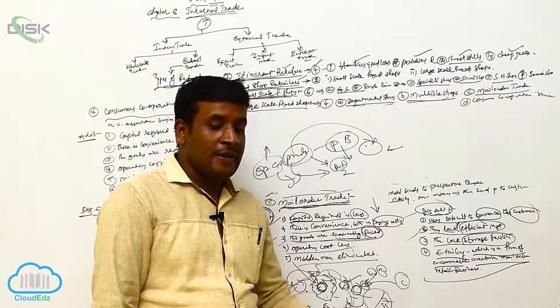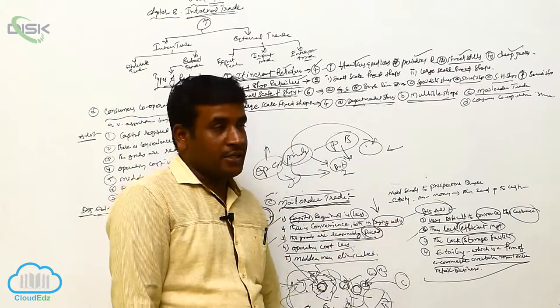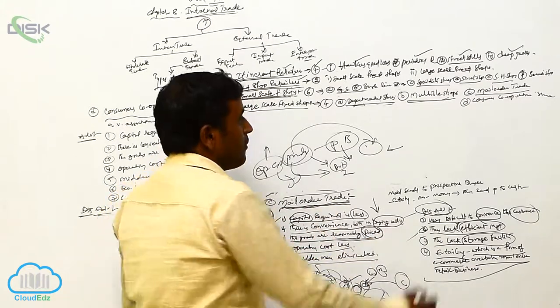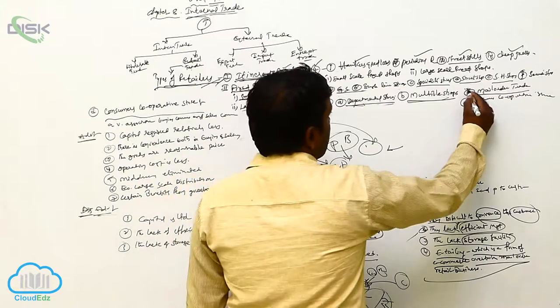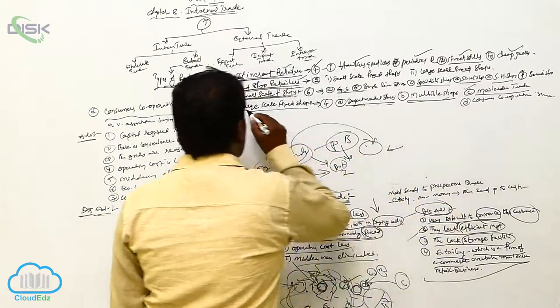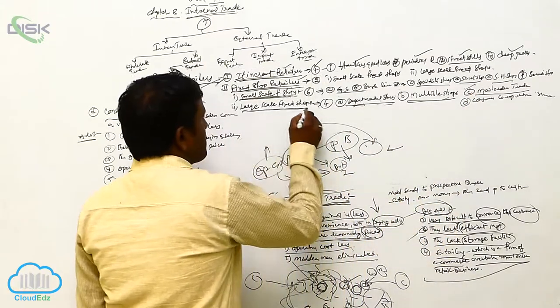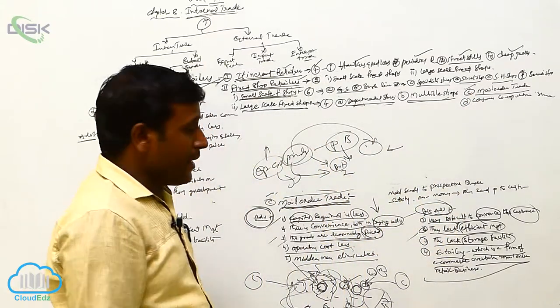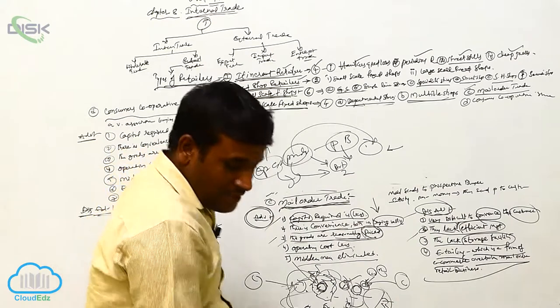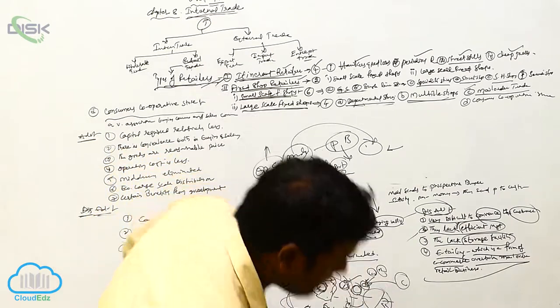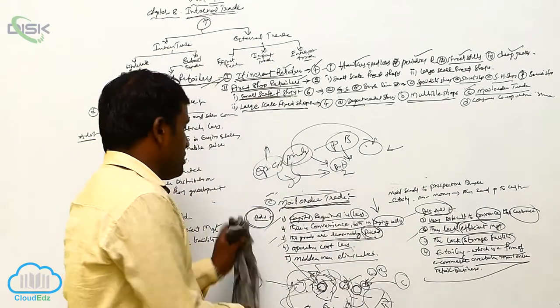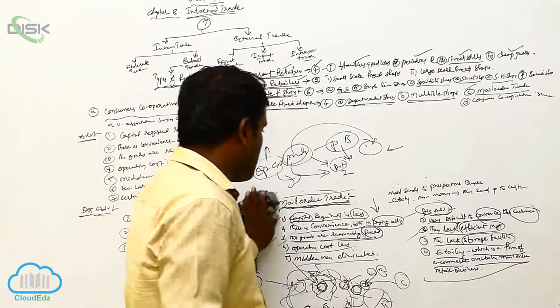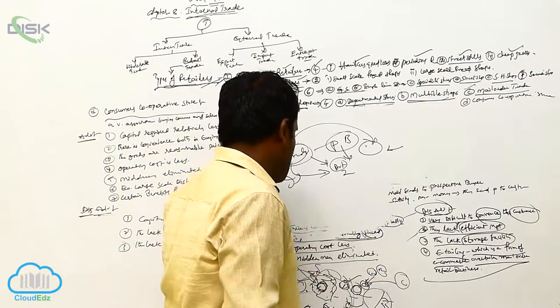These are the disadvantages relating to mail order trade. This is the third type in the types of large-scale fixed shops, and with this we have completed the topic of mail order trade.